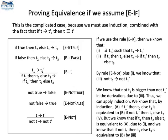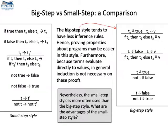But if we assume E-If, this rule here, then we need induction. We will need to apply induction on the derivation t1 arrow t1 prime. You can read the proof on the figure above. But the fact is that this proof becomes more complicated in the small steps formalism than in the big steps specification. In other words, because terms evaluate directly to values, many times we can prove facts using the big steps style without any need of induction.